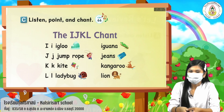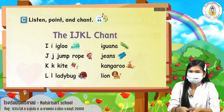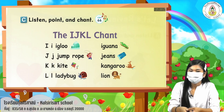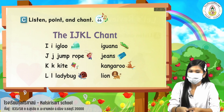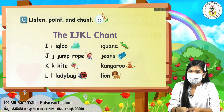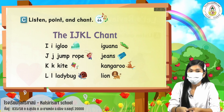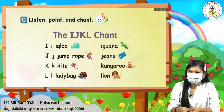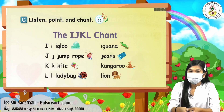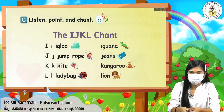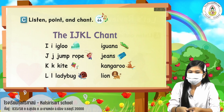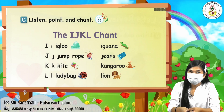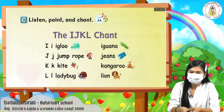I for igloo, iguana. J for jump rope and jeans. K for kite and kangaroo. One more time: K for kite and kangaroo. L for ladybug and lion.